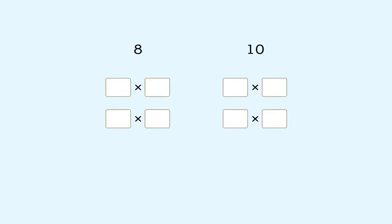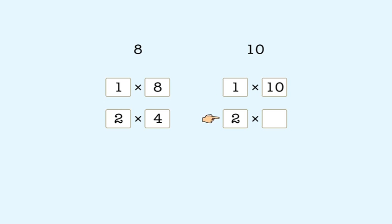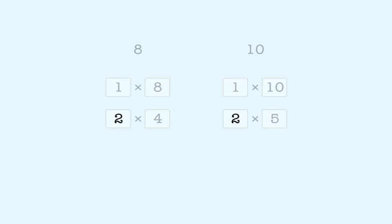Let's look at a few examples. First, write the factors for both numbers. Remember to write the factors in order. Then figure out the largest number that is a factor of both 8 and 10. 2 is the greatest common factor of 8 and 10.